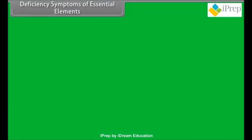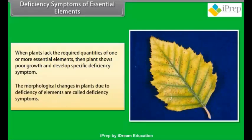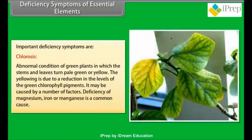Deficiency symptoms of essential elements: when plants lack the required quantities of one or more essential elements, they show poor growth and develop specific deficiency symptoms. The morphological changes in plants due to deficiency of elements are called deficiency symptoms. An important deficiency symptom is chlorosis — an abnormal condition of green plants in which the stems and leaves turn pale green or yellow, due to a reduction in levels of the green chlorophyll pigments. It may be caused by deficiency of magnesium, iron, or manganese.